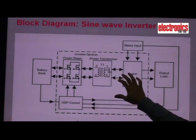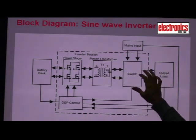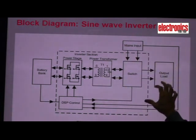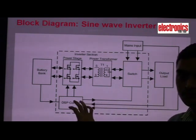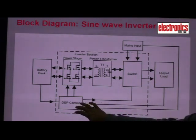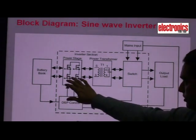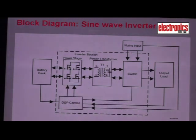Your inverter output is fed to the output load or your mains input is fed to the output load, and that decision is made by your controller. Your controller generates a PWM scheme that drives your power stage which is a full bridge or half bridge.